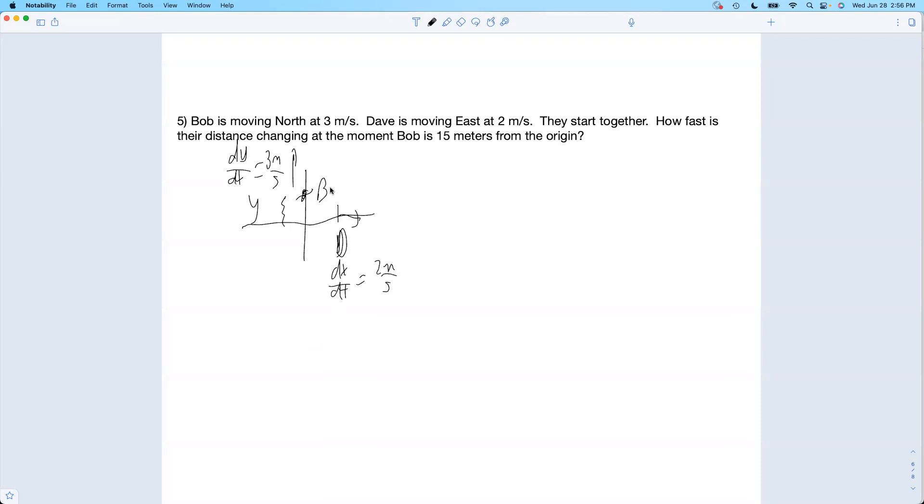And his x is changing at a rate of two meters per second. I want to know how quickly is the distance between them changing. So maybe we'll call this r, the distance between them. And we'll even write it as a function of t: r(t) is the distance between Bob and Dave at time t, or after t seconds.